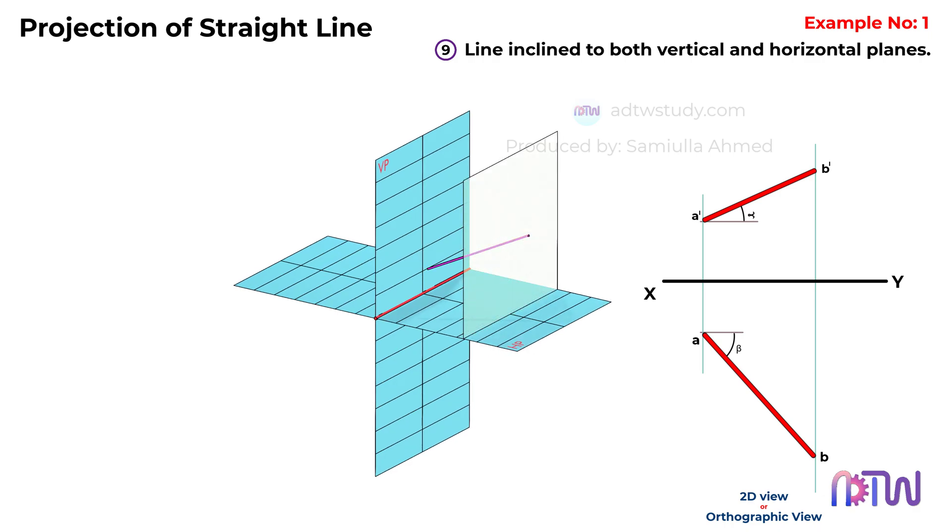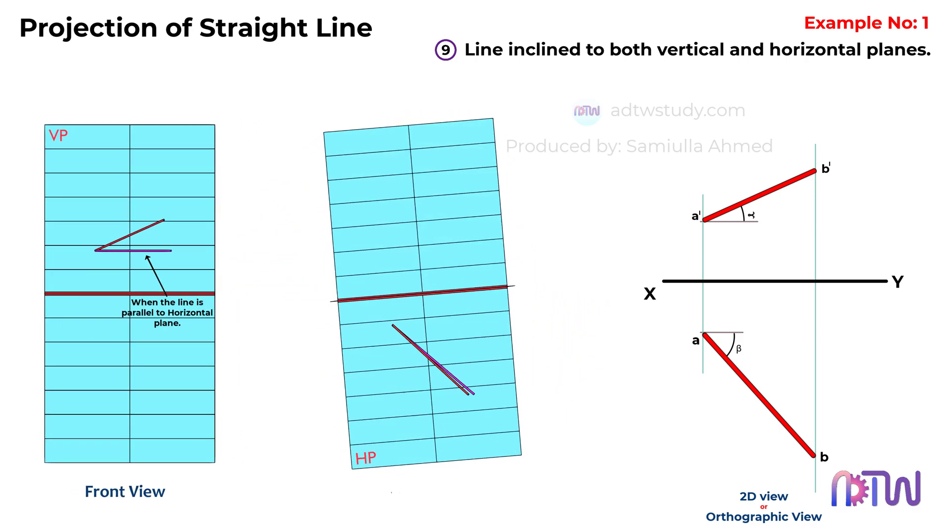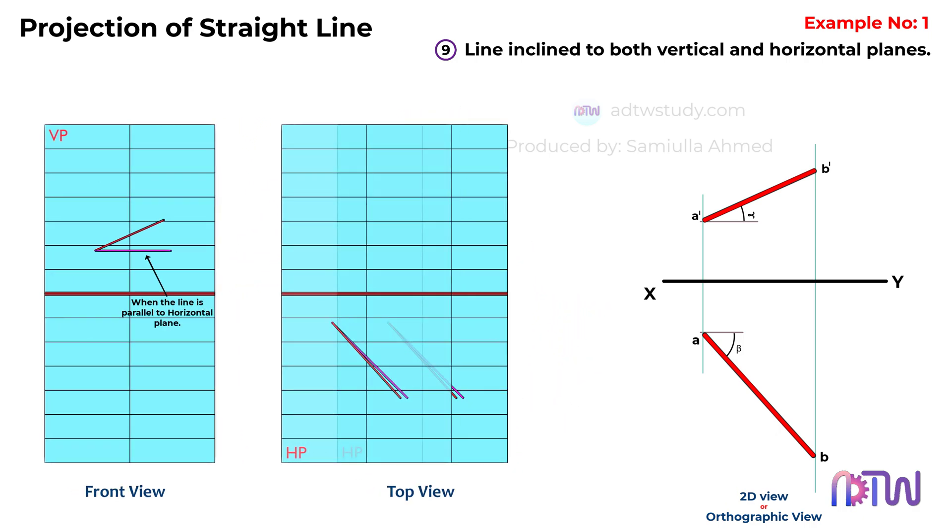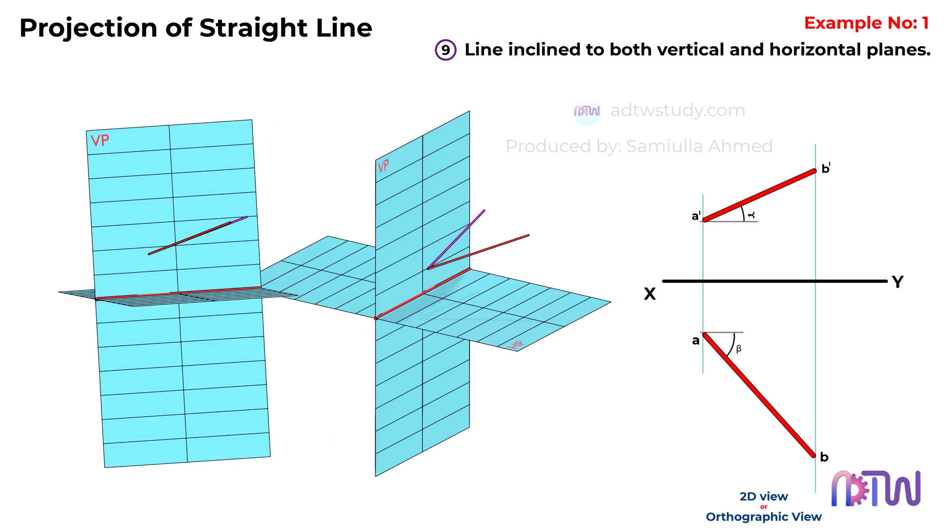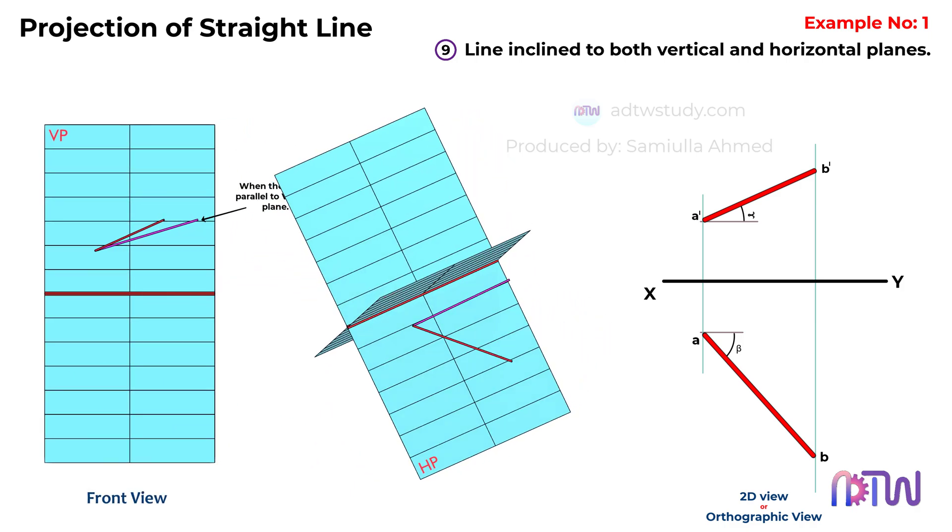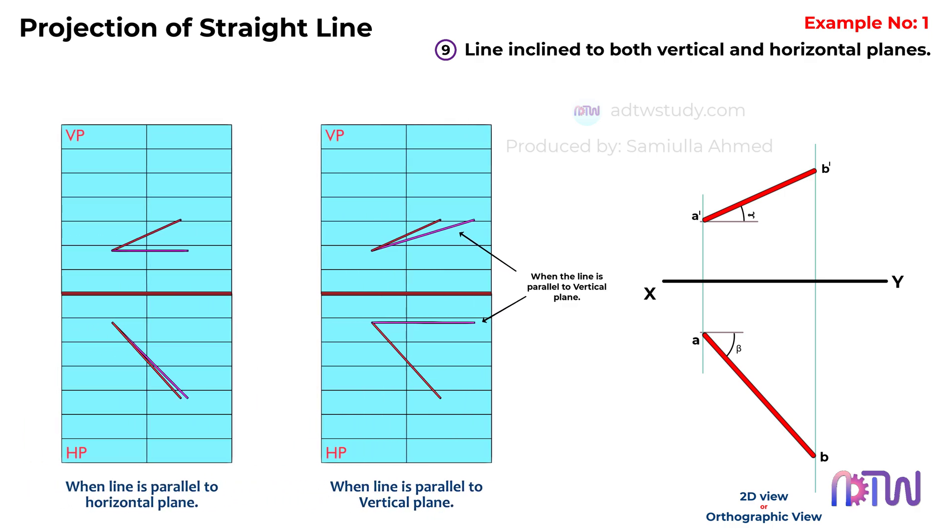For instance, imagine this line parallel to the horizontal plane. From the top view, you'd clearly see its true length. Similarly, if it were parallel to the vertical plane, the front view would reveal its true length.